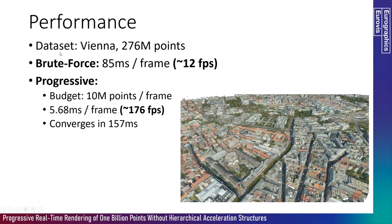Regarding performance, for a dataset with 280 million points, rendering with a brute force approach takes around 85 milliseconds per frame — roughly 12 frames per second, which is awful. With our progressive method rendering only 10 million points per frame, we reach around 176 frames per second. The thing converges in around 150 milliseconds, about double the brute force approach. On the other hand, you always have responsiveness — you can always move around in real time. I think this is a trade-off that is very well worth it.